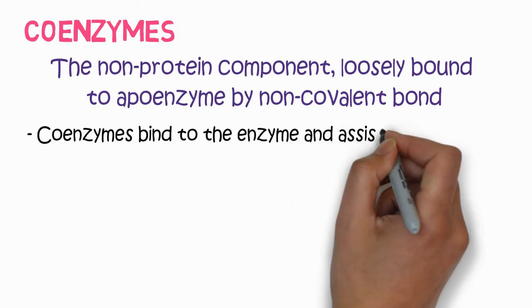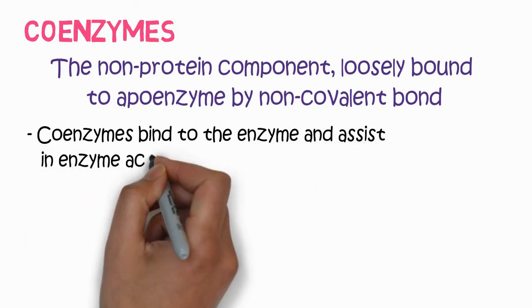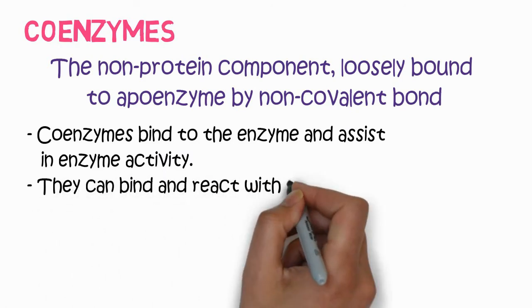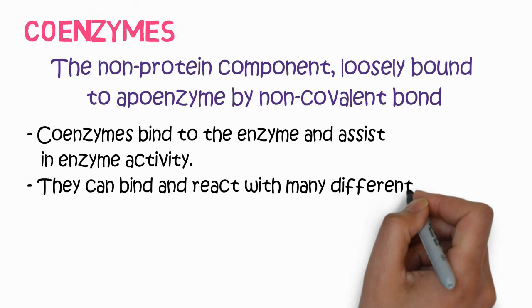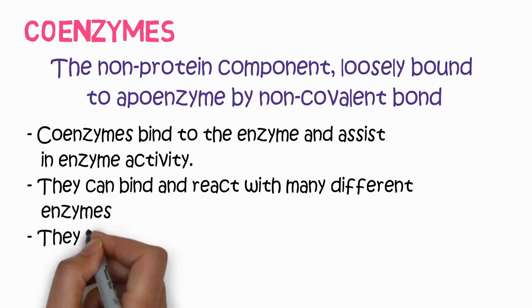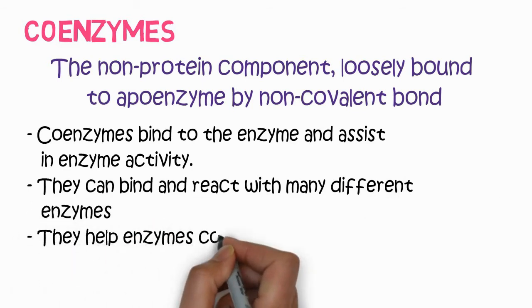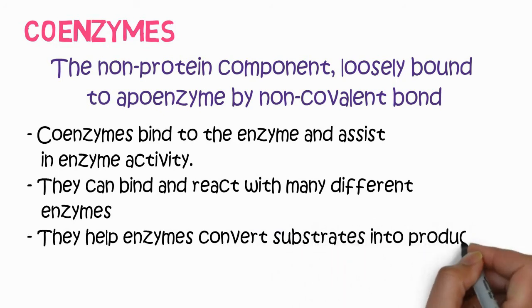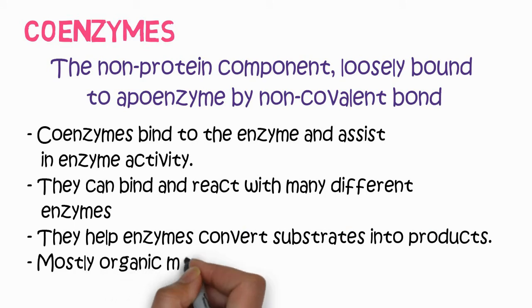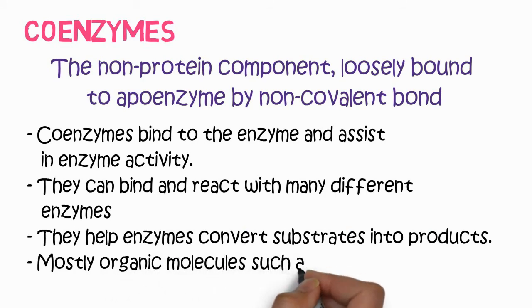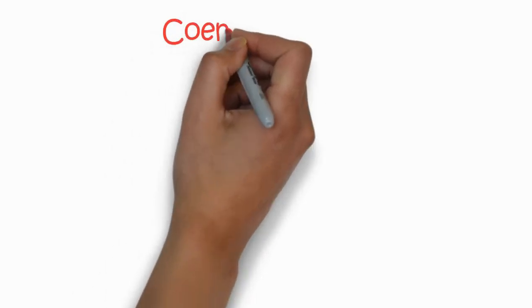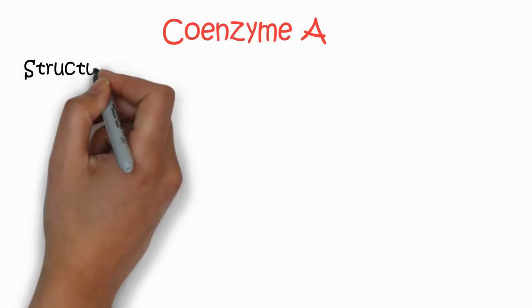Coenzymes bind to the enzyme and assist in enzyme activity. They can bind and react with many different enzymes. They help enzyme convert substrate into products. Coenzymes are mostly organic molecules such as vitamins. Most of them are vitamins.